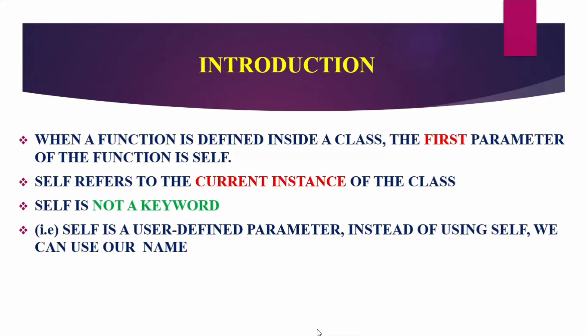The keyword 'self' — self is a user-defined parameter. It is a user-defined parameter, meaning the word 'self' is what we use by convention. It is compulsory to use it as the first parameter, and the name 'self' is what we conventionally use.